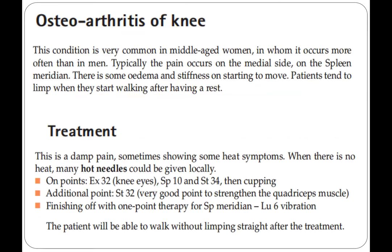Osteoarthritis of the knee is very common in middle-aged women. Typically the pain occurs on the medial side along the spleen meridian, with edema and stiffness on starting to move, and the patient tends to limp when beginning to walk after rest. This is a damp pain, sometimes showing heat symptoms. When there is no heat, many hot needles can be given locally on Extra Point 32 (knee eyes), Spleen 10, and Stomach 34, then capping. An additional point is Stomach 32, which strengthens the quadricep muscles. Finish with one-point therapy for the spleen meridian: Lung 6 vibration. The patient will be able to walk without limping straight after treatment.